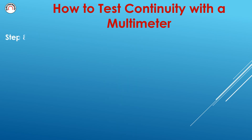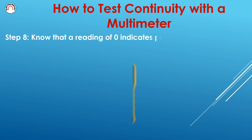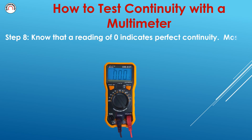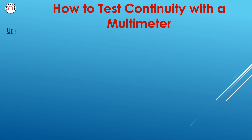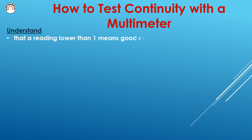Step 8: Know that a reading of zero indicates perfect continuity. Most multimeters will beep continuously when testing a connection with good or perfect continuity. A reading lower than 1 means good continuity or dirty terminals.